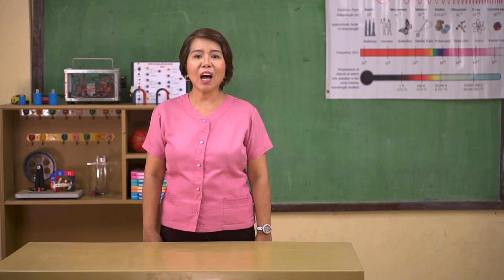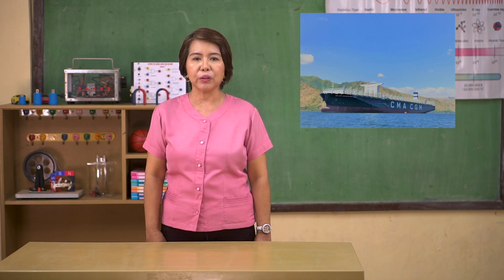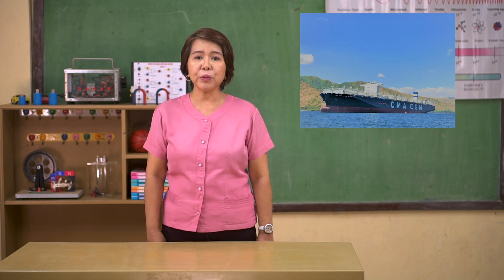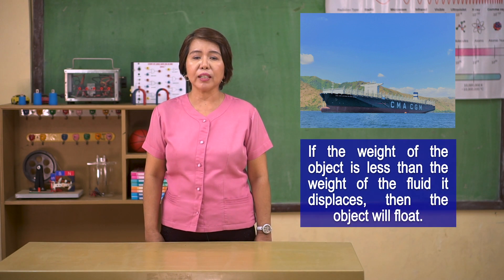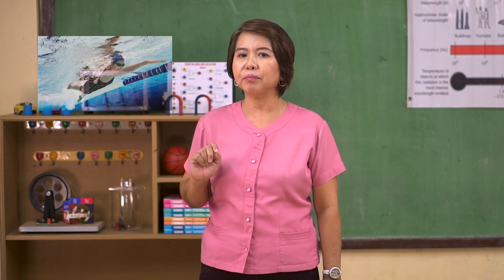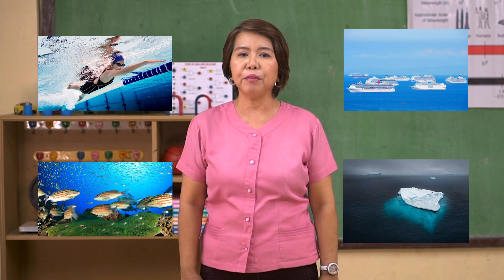One of the applications of buoyancy and Archimedes' principle is how ships float in water. A ship is designed to have a long and wide base, which allows it to displace water that is heavier than the ship itself. As Archimedes' principle states, if the weight of the object is less than the weight of the fluid it displaces, the object will float. Buoyancy and Archimedes' principle are also responsible for human swimmers, fish, and icebergs staying afloat in water.